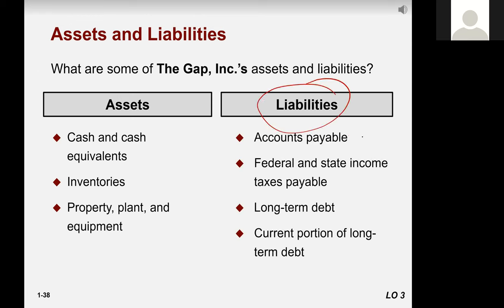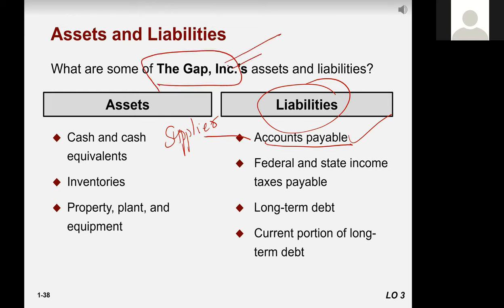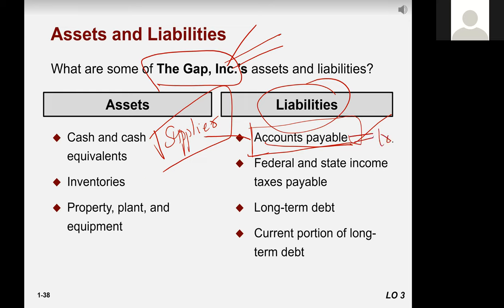For liabilities, accounts payable refers to amounts owed to suppliers. Gap Inc. purchases inventory and stocks from third-party vendors, and under normal business agreements, payment is made later. Merchandise comes into stores, is sold, and the accounts are settled continuously as supplies move between stores and countries. If accounts payable is 10,000 dollars, it means 10,000 dollars is still owed to suppliers.